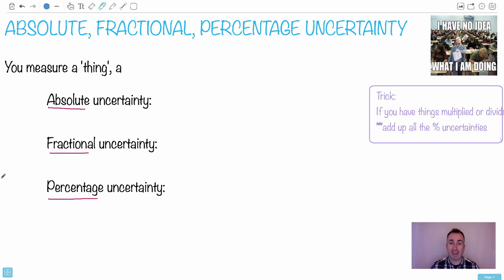Absolute, fractional, and percentage uncertainty are really important for paper three. So in order to do this, we have to understand sort of a measurement.